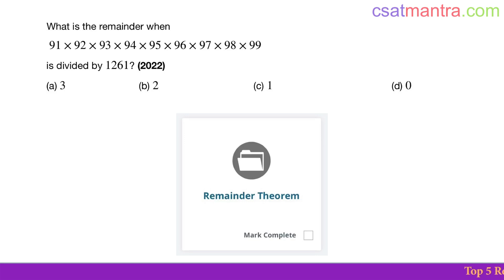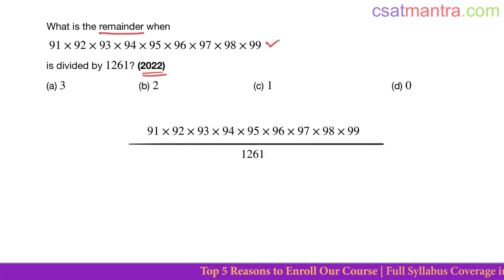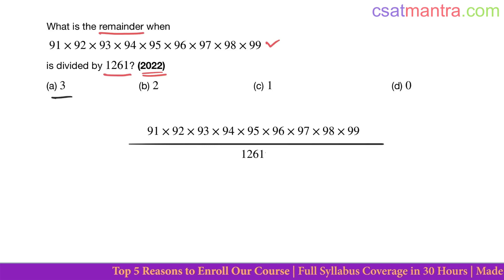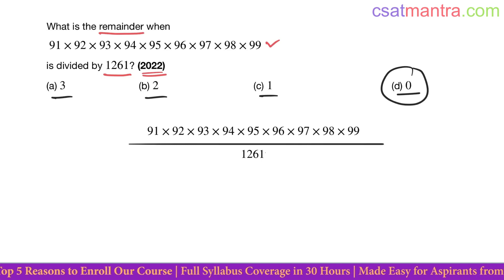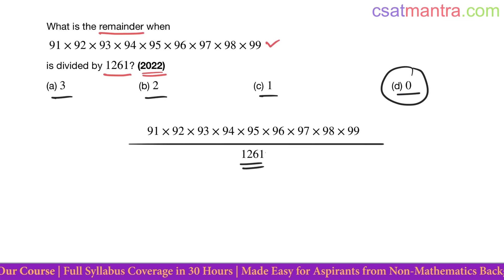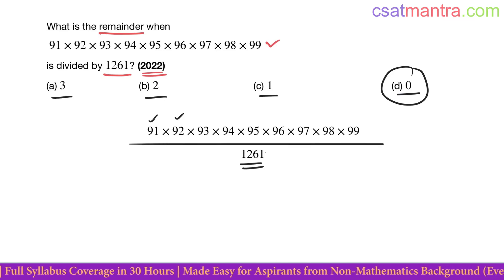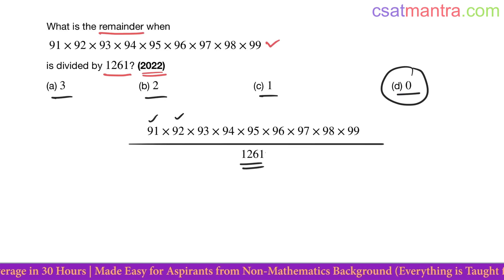This question is asked in 2022 based on the Remainder Theorem from the Number System chapter. What is the remainder when this product is divided by 1261? The options are 3, 2, 1, 0. We have 0 as a candidate — let's see if we can write 1261 as a multiple of either 91, 92, or any of these numbers. If that's the case, then the answer would be 0.